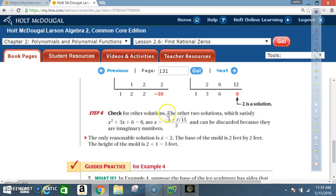Step 4. Check for other solutions. The other two solutions, which set x squared plus 3x plus 6 equals 0, are x is equal to negative 3 plus or minus i, which means imaginary, times the square root of 15 over 2. And they can be discarded because they are imaginary numbers. The only reasonable solution is x is equal to 2. The base of the mold is 2 by 2 feet. The height of the mold is 2 plus 1, which is 3.